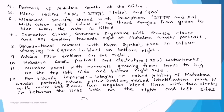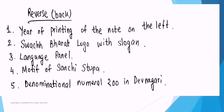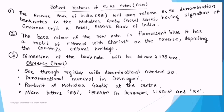The number panel has numerals growing from small to big on the top left and bottom right sides. For visually impaired people, intaglio or raised printing of the Mahatma Gandhi portrait is available, along with the Ashoka Pillar emblem, identification mark 'H' with micro-text '200,' and four angular bleed lines with two circles in between on both the right and left sides. On the reverse, there is year of printing, Swachh Bharat logo with slogan, language panel, and the motif of Sanchi Stupa, with denomination numeral 200 in Devanagari.